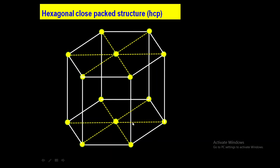This is a simple hexagonal unit cell. But in the case of hexagonal close-packed structure, there is one triangular layer in the middle of the unit cell — a triangular layer of atoms. These 3 atoms are inside the unit cell forming a triangular layer. So, the hexagonal close-packed structure consists of alternate hexagonal layers and triangular layers. One unit cell consists of 2 hexagonal layers and 1 triangular layer in the middle.